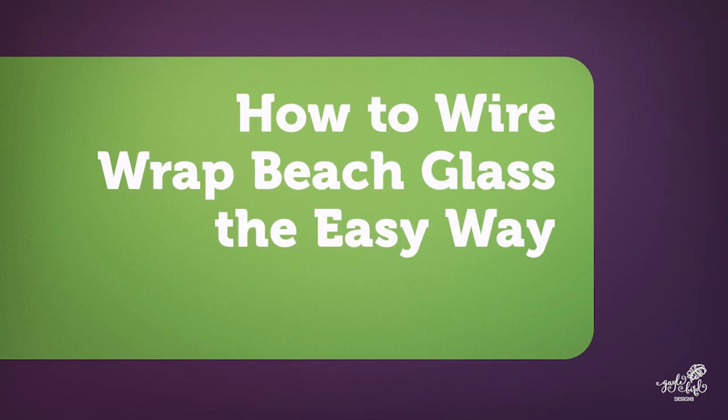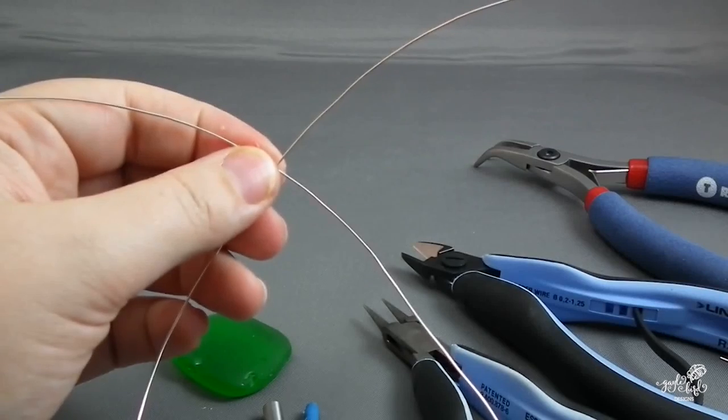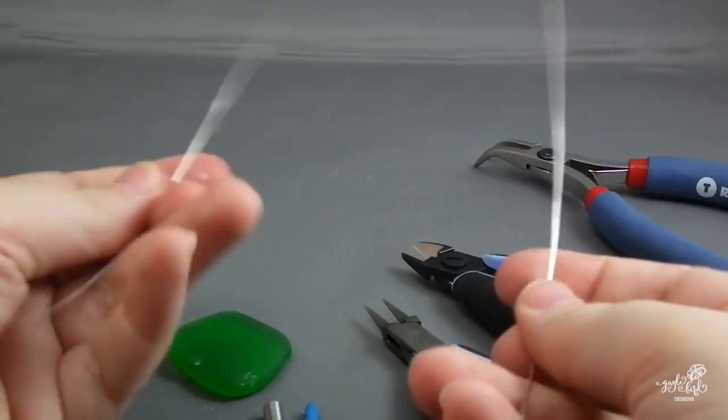I'd like to add some audio to my existing how to wire wrap beach glass the easy way video. Let's get started. First, you want to cut two pieces of wire that are the same length, about 10 inches is probably fine for most beach glass.